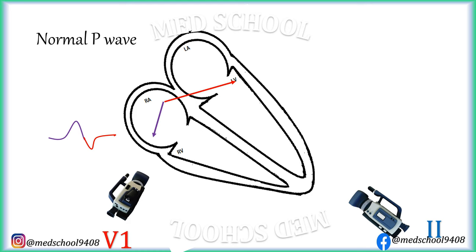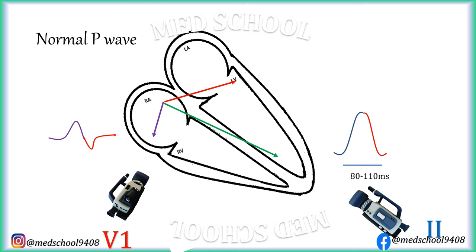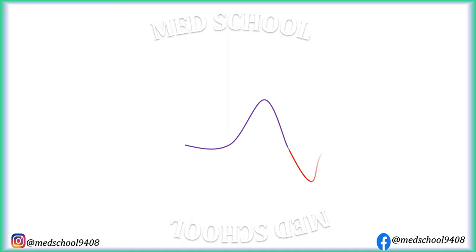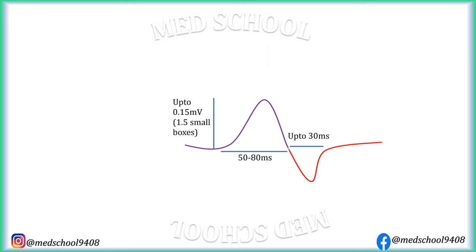The vector formed by both atrial depolarizations is directed toward the positive pole of lead V2. This lead shows a positive P wave. The initial part of the wave is formed by right atrial depolarization and the terminal part is formed by left atrial depolarization. Normal duration of P wave in lead V2 is 80 to 110 ms and its amplitude is up to 0.25 mV, i.e. 2.5 small boxes. For the initial positive deflection of P wave in lead V1, normal duration is 50 to 80 ms and normal amplitude is up to 0.15 mV, i.e. 1.5 small boxes. For terminal negative deflection, normal duration is up to 30 ms and normal amplitude is up to 0.1 mV, i.e. 1 small box.